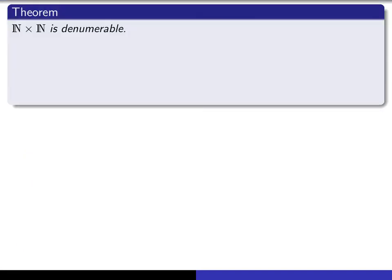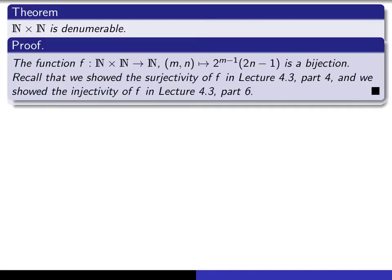So let's look at the proof. The proof is actually we've already done all of the main steps in earlier lectures. Because we've actually already, in earlier lectures, written down a bijection from n cross n into n. Namely, it's this function here.